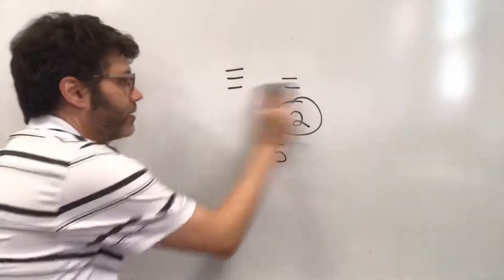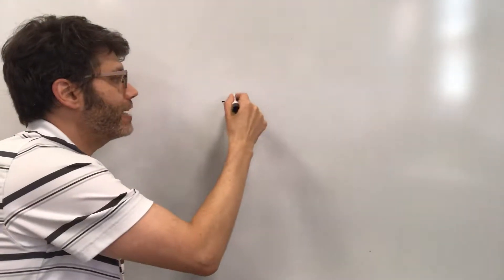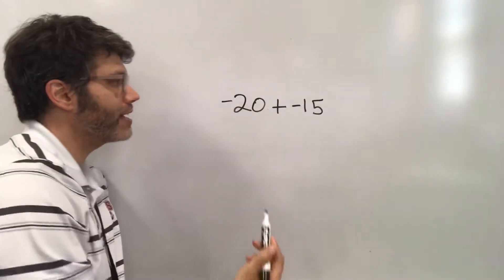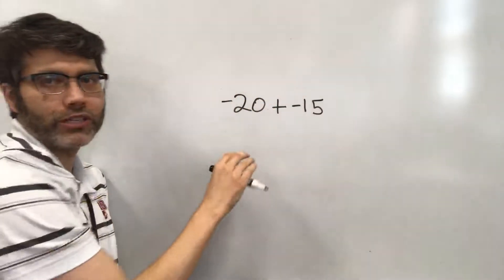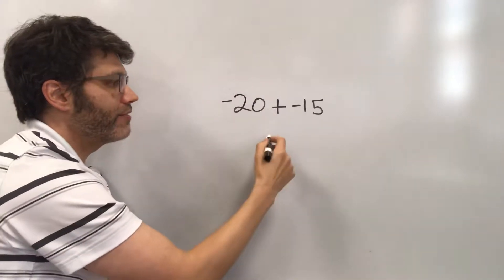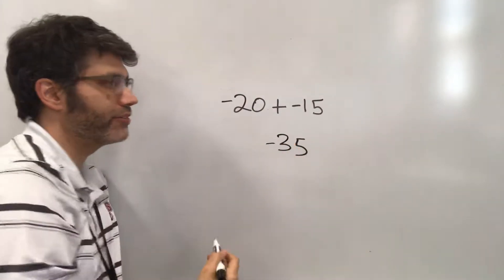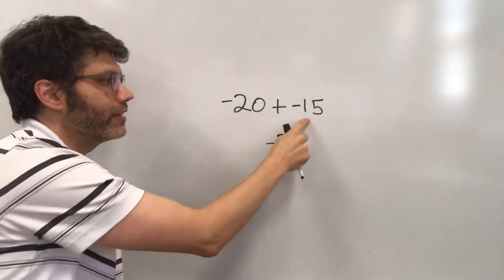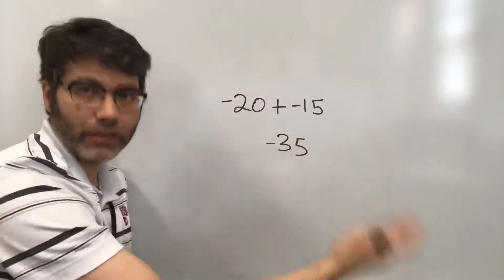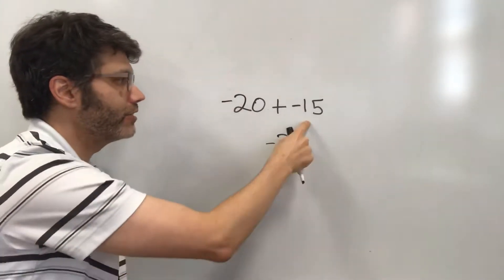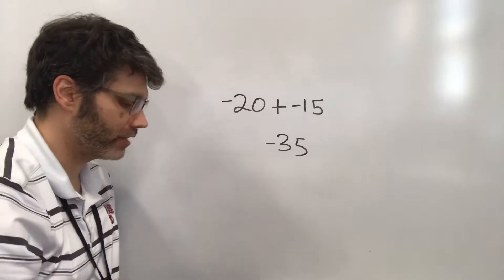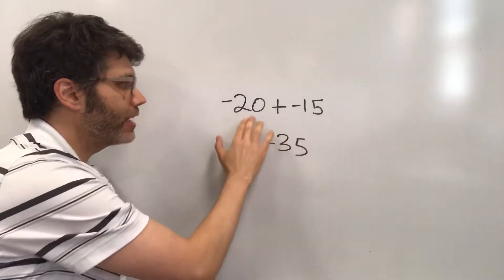For instance, if we had 20 negatives and we were going to add 15 negatives to that — just think of 20 negatives and 15 negatives — altogether we have 35 negatives, or negative 35. So adding two negatives is going to make an even more negative number. It's always going to be a number that's even more negative than either of the two.